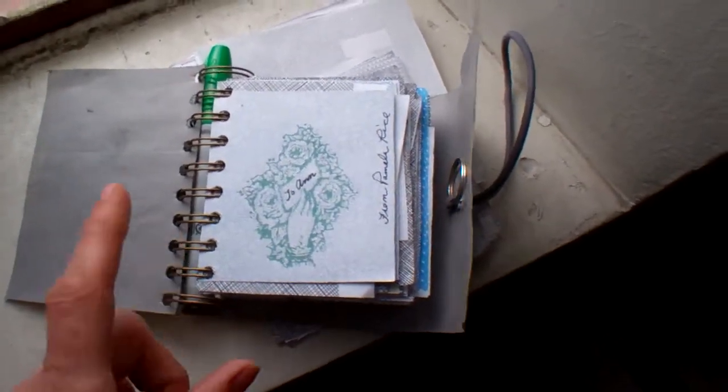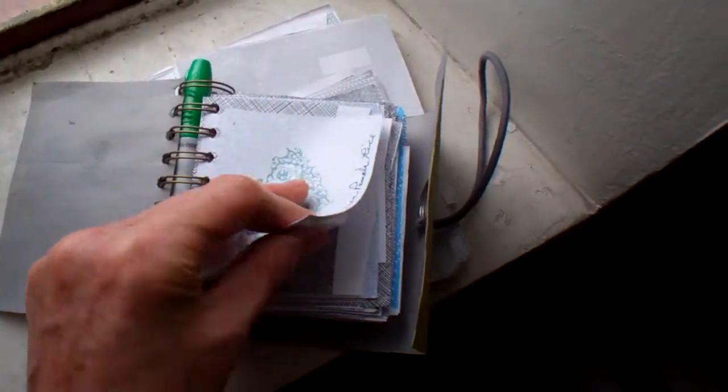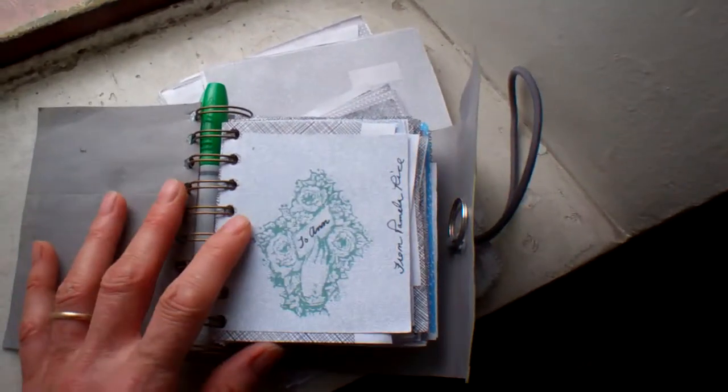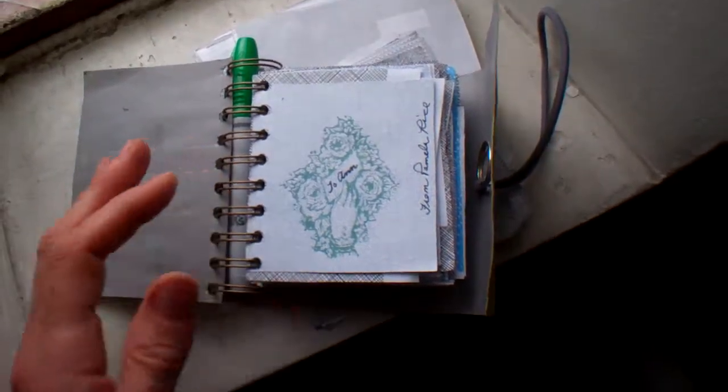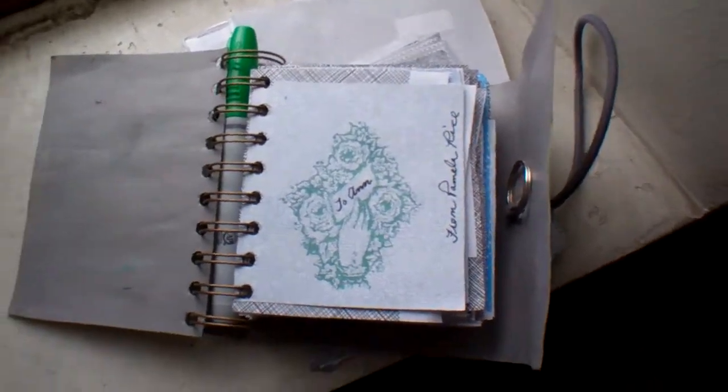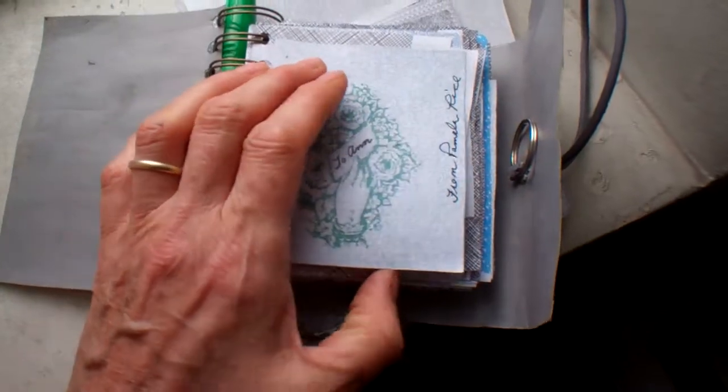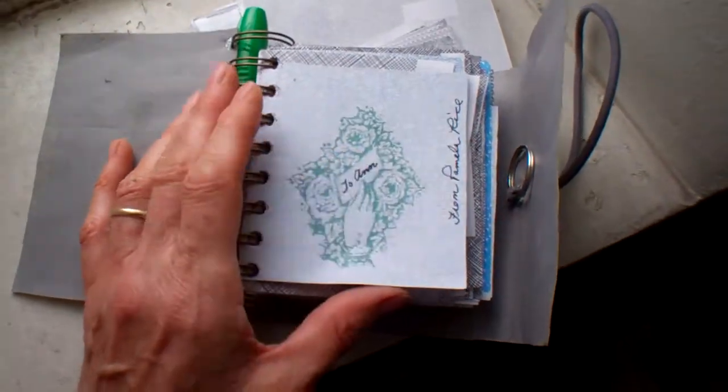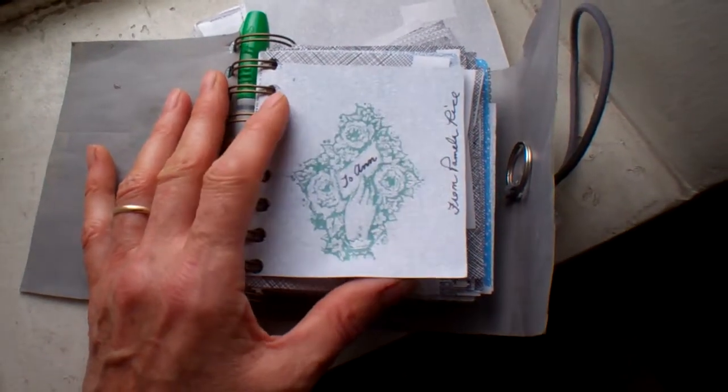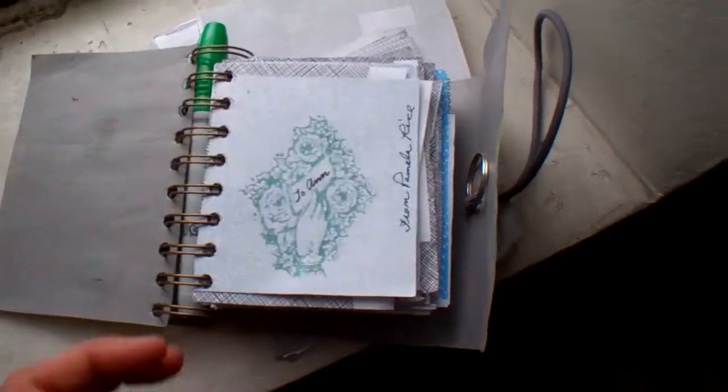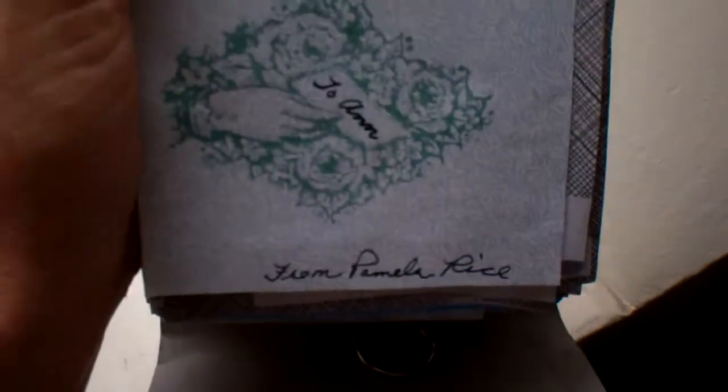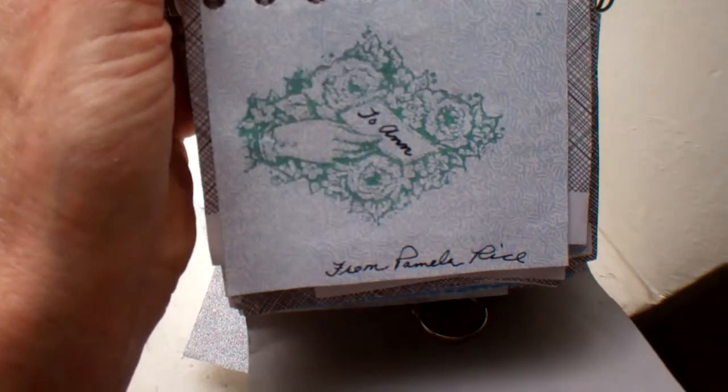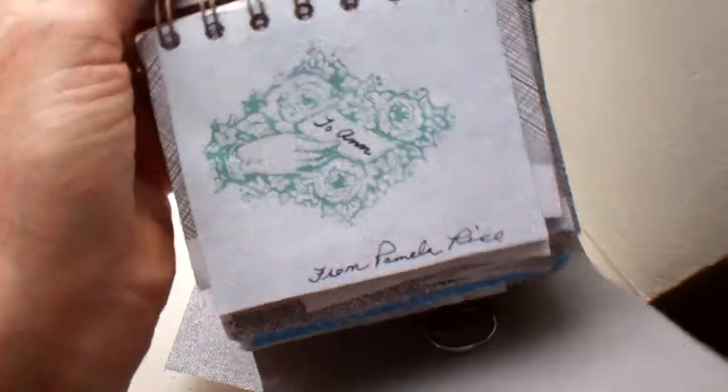I love my Cinch by We Are Memory Keeper spiral binding system. What we have here is for one of my very best friend's mother, Ann. On the front page I say to Ann, a nice stamp that I love, had for many years, so from Pamela.